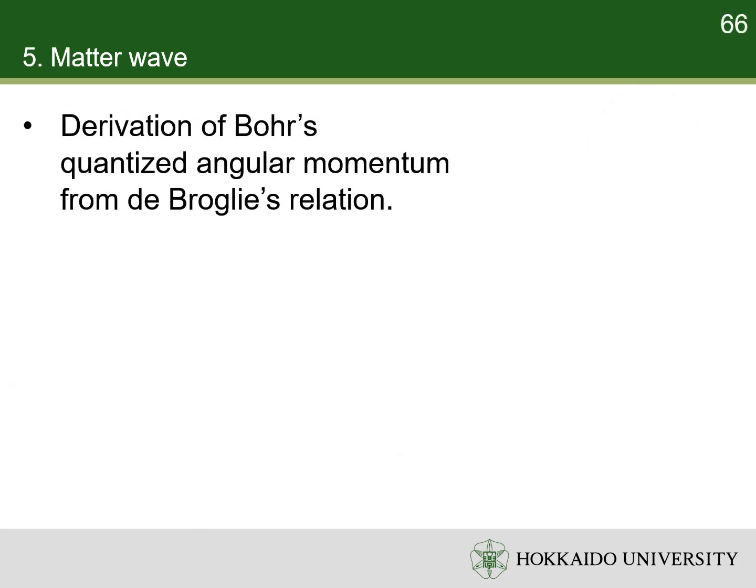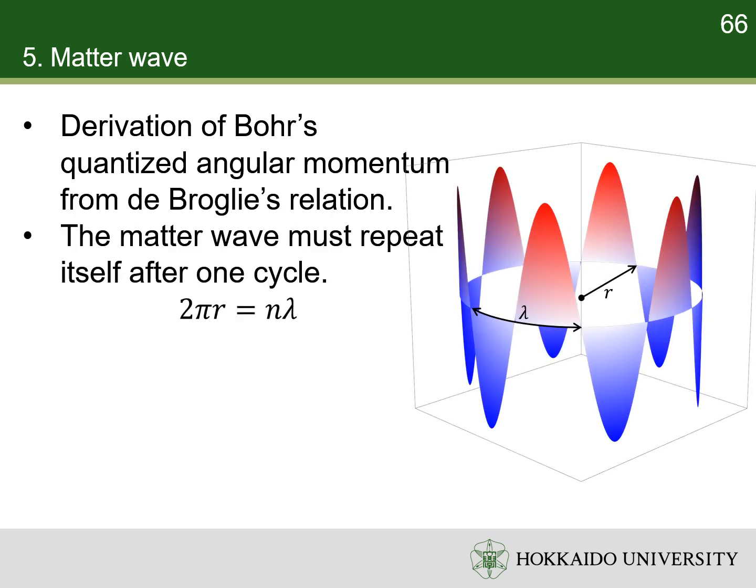Bohr's condition that the angular momentum is an integer multiple of reduced Planck constant was reinterpreted by de Broglie as a standing wave condition. A whole number of the electron's wavelengths must fit along the circumference of the electron's orbit. Thus, the electron's wavelength depends on the radius and quantum number. The angular momentum is the momentum multiplied by radius, while the momentum is calculated with the de Broglie relation. The result is Bohr's second postulate.